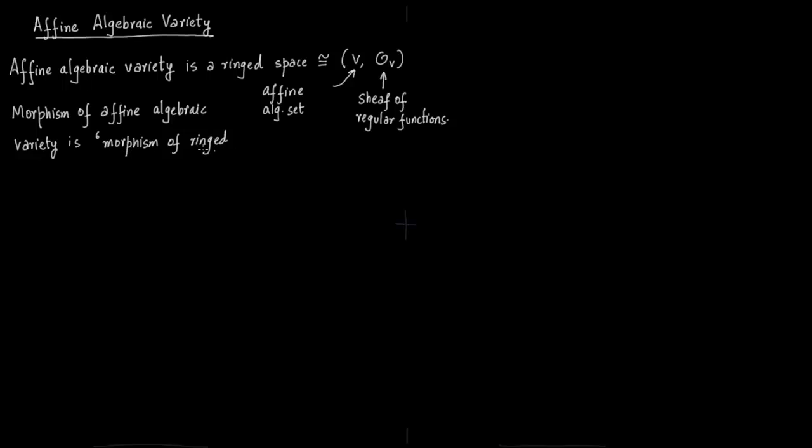Now let us talk about a proposition. The proposition essentially says that open sets of affine algebraic sets are affine algebraic varieties. So you have V is affine algebraic set and you consider f as a function of O_V, then U(f) is affine algebraic variety. I will say again, V is affine algebraic set, not variety which I have written.